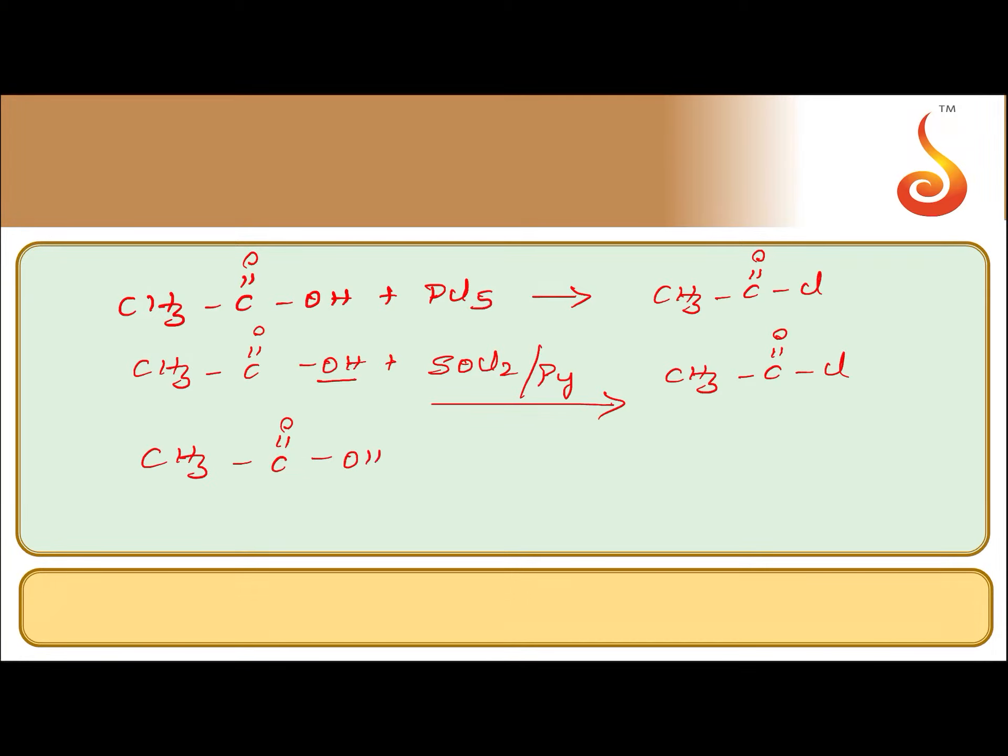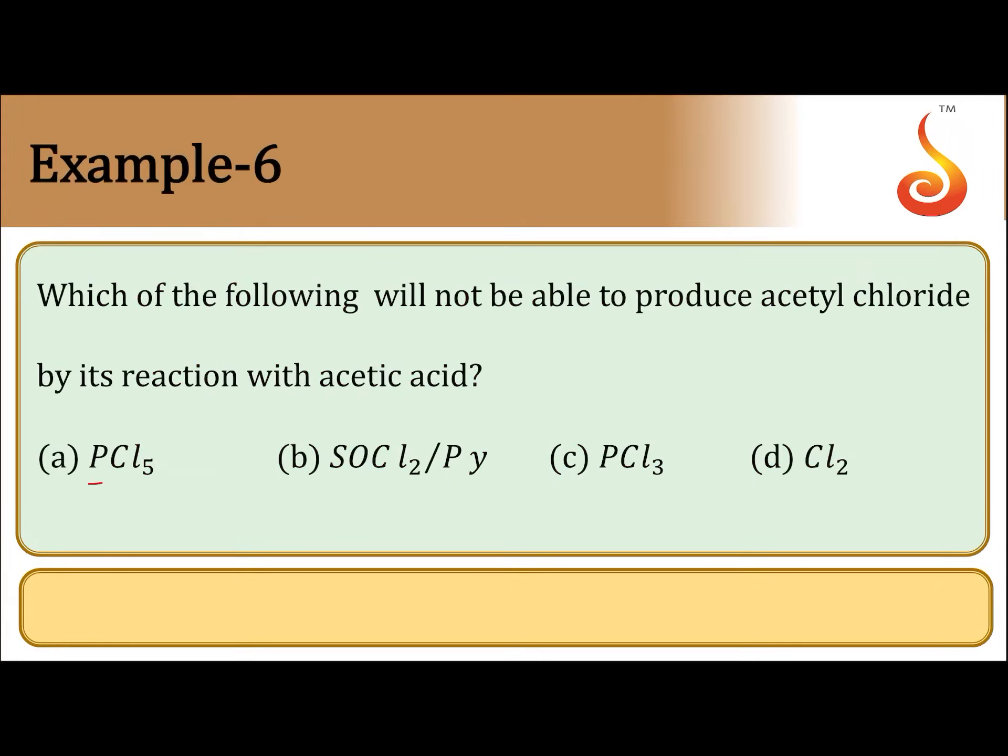Now let us see the third option: CH3-C(=O)-OH plus PCl3. With PCl3 also we will get acid chlorides.